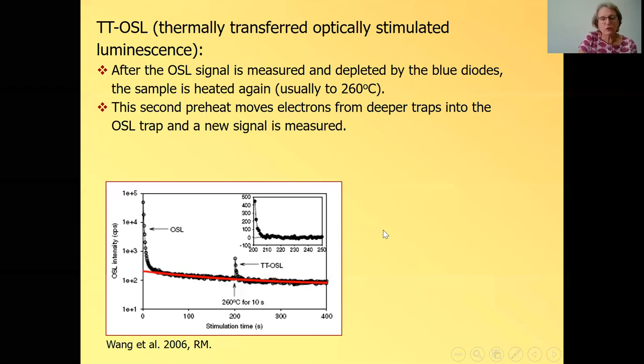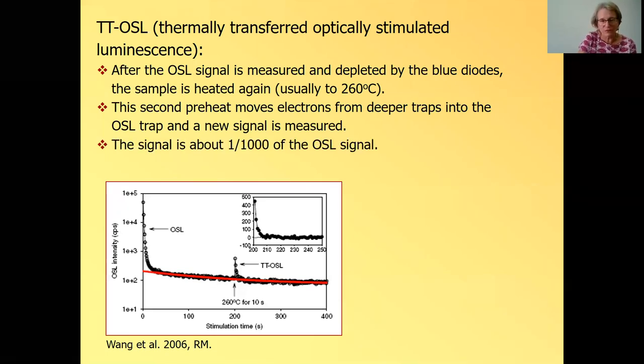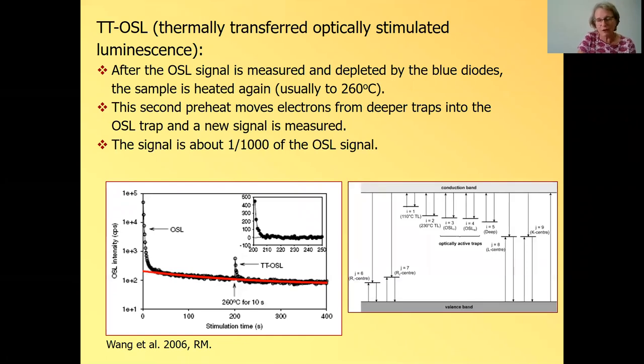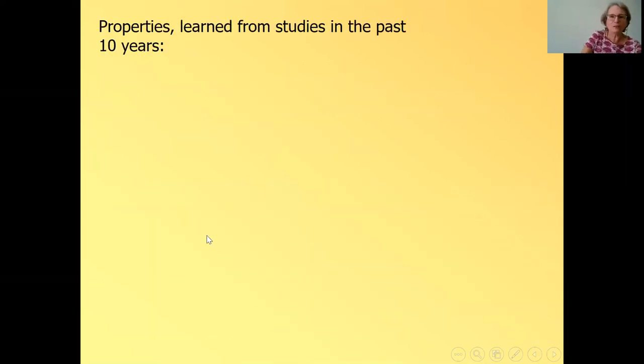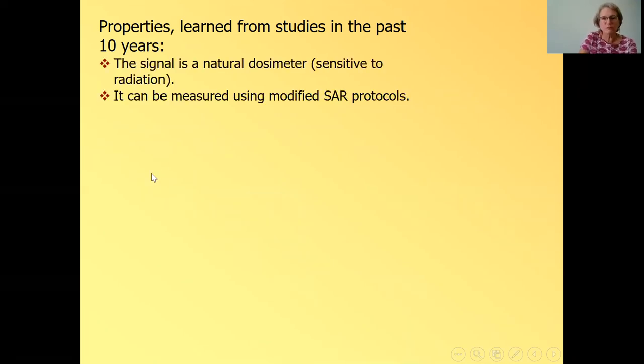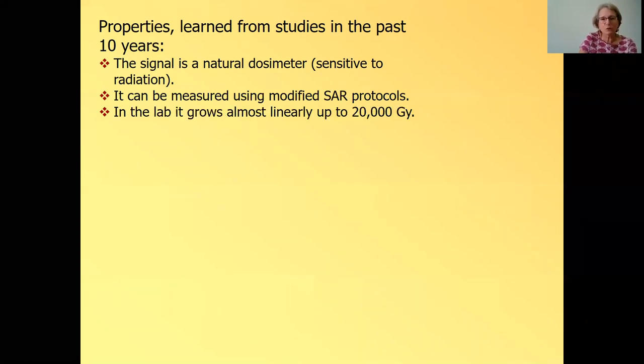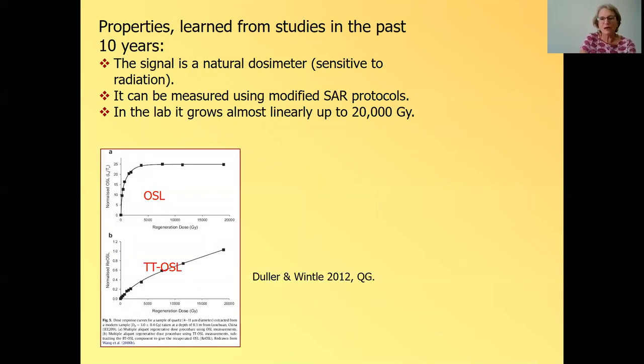A new signal shows up and we measure it again. And here you can see the signal on its own. And this signal is usually very weak, about one thousandth of the OSL signal. And if we go back to the diagram I showed you before, the OSL signal comes from this trap. And apparently we have movement of charge from this trap, which is not light sensitive or is deeper into this OSL trap. Over the last 10 years, it's been studied quite extensively. And what have we learned about it? It's a natural dosimeter. It's sensitive to radiation. It can be measured using different types of SAR protocols. In the lab, it grows almost linearly up to 20,000 grays. So this is really amazing. 20,000 grays, you can date up to 20 million years. It's really almost verging on ridiculous.